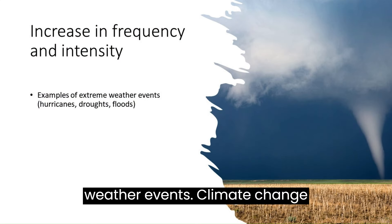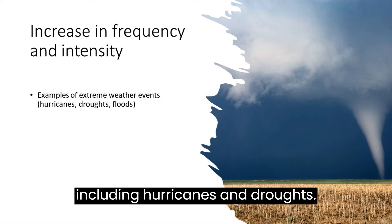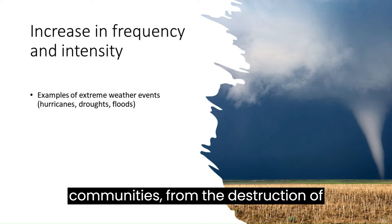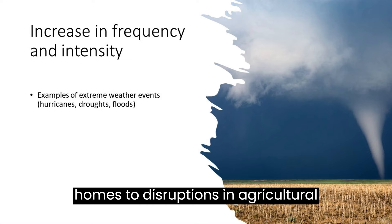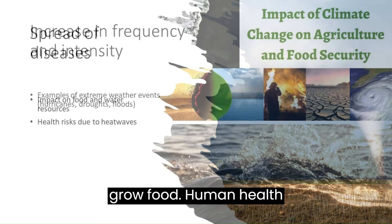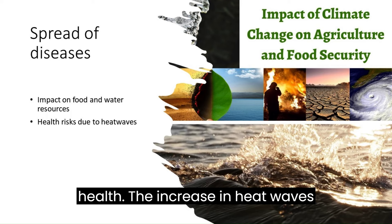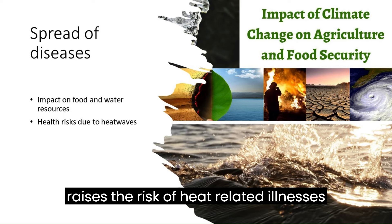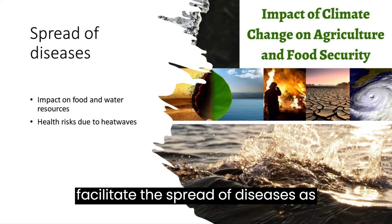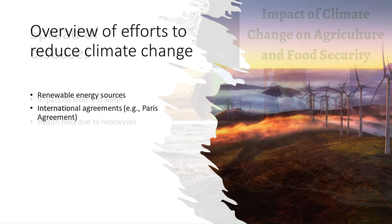Climate change intensifies extreme weather events, including hurricanes and droughts. These occurrences pose significant dangers and create problems for communities, from the destruction of homes to disruptions in agricultural practices, affecting the ability to grow food. Changes in climate have direct implications for human health — the increase in heat waves raises the risk of heat-related illnesses, and alterations in climate can facilitate the spread of diseases as new areas become conducive to disease-carrying insects.